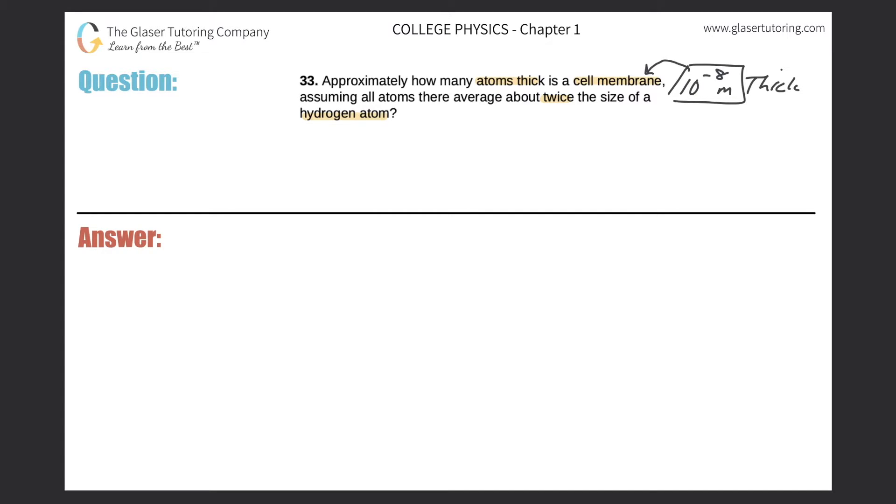We also need to estimate or look up the average size of a hydrogen atom in terms of its diameter. So the average size would be something like 10 raised to the negative 10 meters. That would be the average thickness of a hydrogen atom.